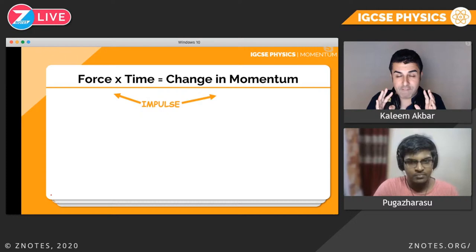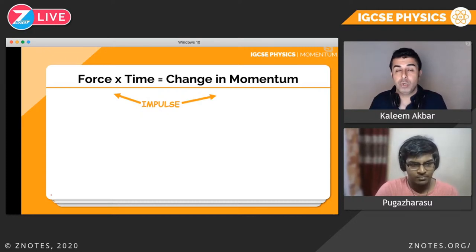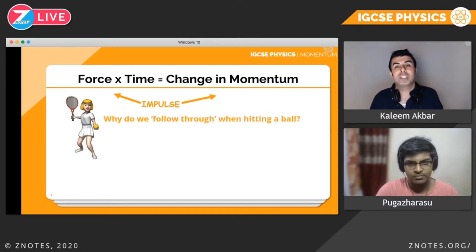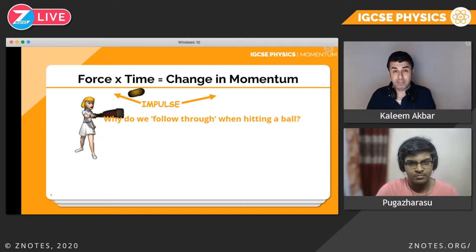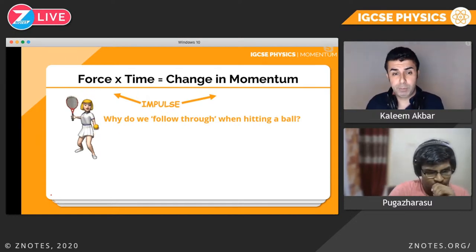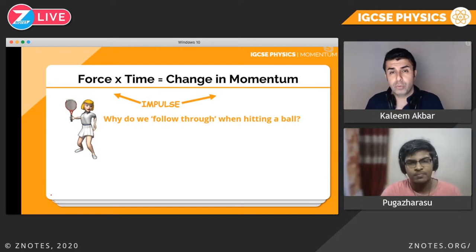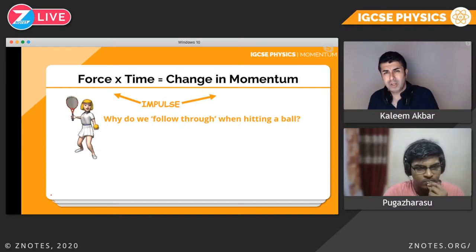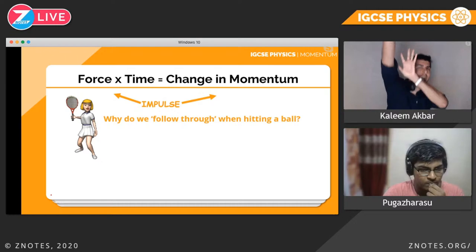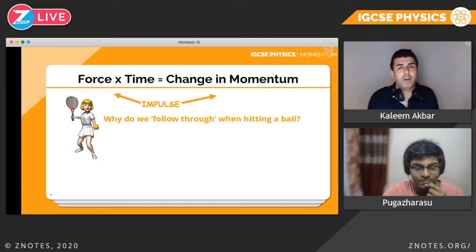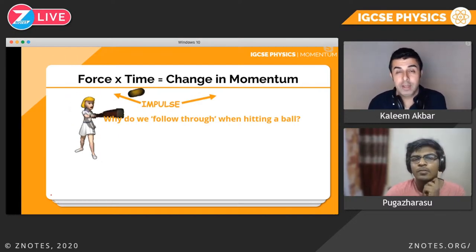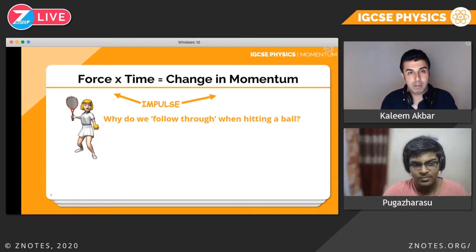F equals mv minus mu divided by t is not impulse. Take the time, multiply it to both sides, and now you have impulse. So how is this useful? At the start I hinted that we use this in sports. Why do we follow through when hitting a ball? Cricket ball, golf ball, tennis ball, basketball — there's an actual physics reason why athletes do that, even though they don't consciously think of it.